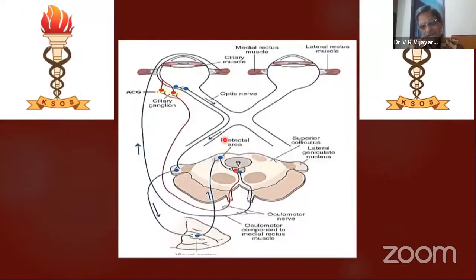Next, the accommodation pathway. When you write in exams, you must mention: pupil reacting for direct, for consensual, and also for near. The near reflex involves three components: the eyes have to converge, the pupil has to constrict, and the lens has to change shape. These are the three components of the accommodation reflex.